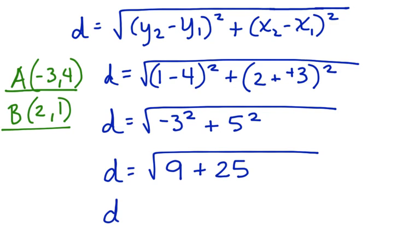Next we have d is equal to the square root of 34. When we find the square root of 34, we find that it's not a perfect square, so we end up with an approximation. Let's write approximately 5.83.